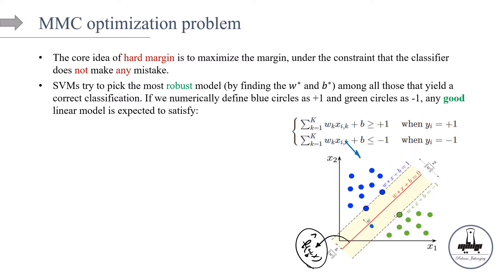Let's see how it's done numerically. If we define blue circles on the margin as +1 and green circles as -1, then any good linear model is expected to satisfy certain constraints. We use +1 and -1 for mathematical convenience — we could have used 0/1 or +5/-1, but +1/-1 simplifies the math. Let's now do some calculations over the graph.